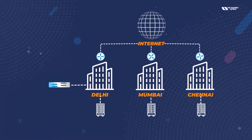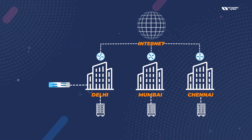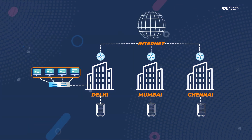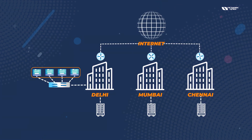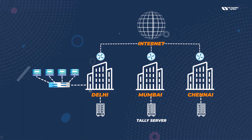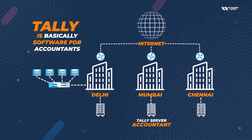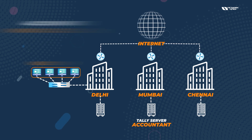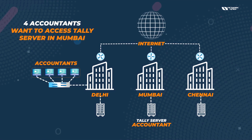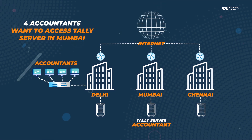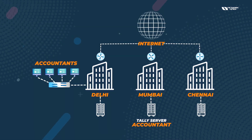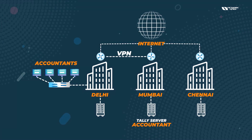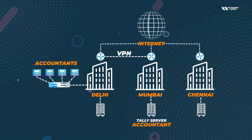We have a LAN network here with hundreds of users available in Delhi. All these users want to access the Tally server. Tally is basically accounting software. Suppose all the accountants want to access the Tally server which is in Mumbai, so we are going to connect the Delhi office with the Mumbai office with the help of VPN.